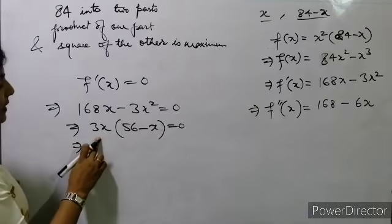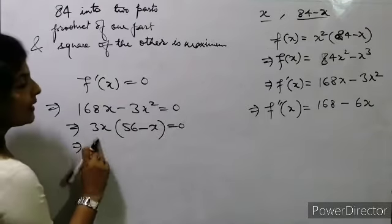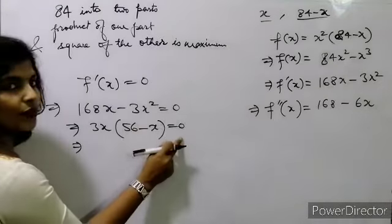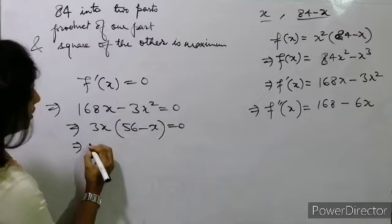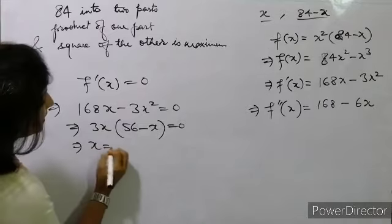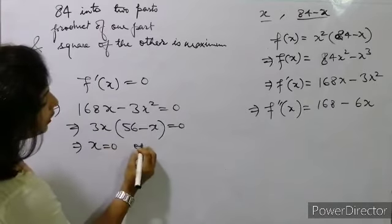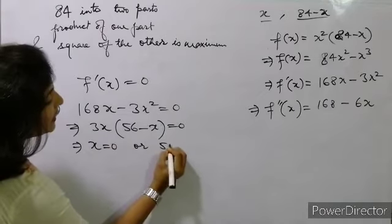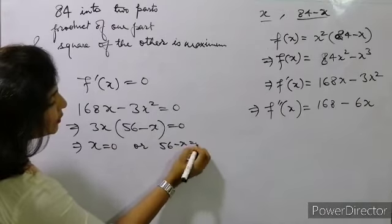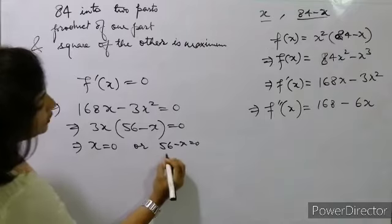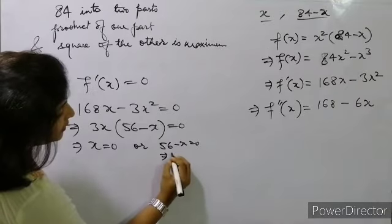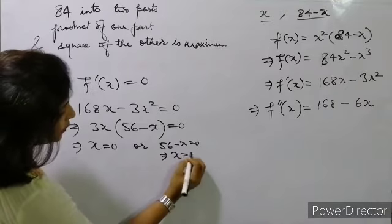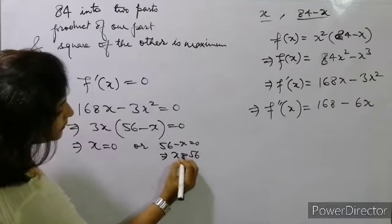Since 3 cannot equal 0, there are two conditions: either x = 0 or 56 - x = 0, which means x = 56.